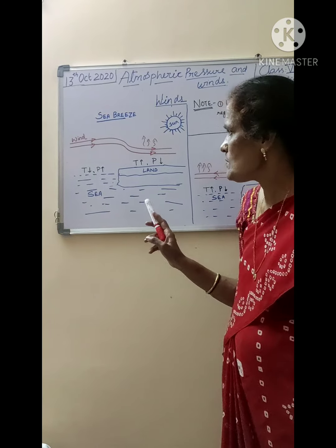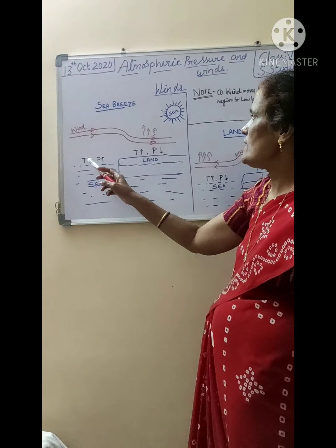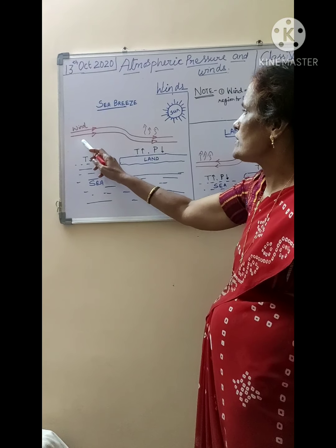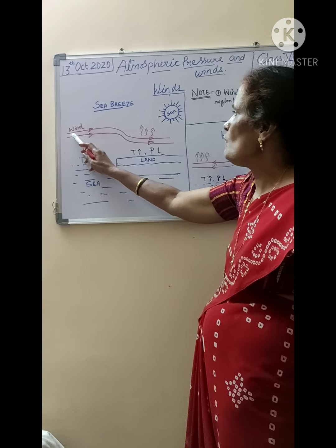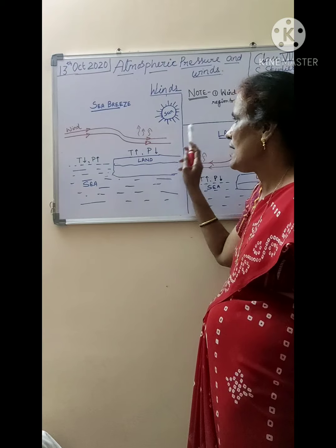The wind blows from sea to land. Because the sea has high pressure and the land has low pressure, the wind blows from sea to land.